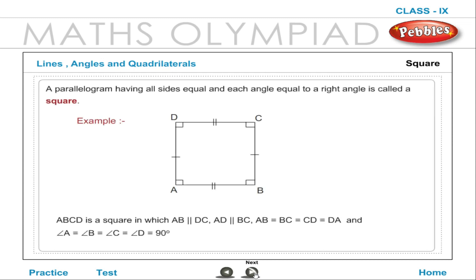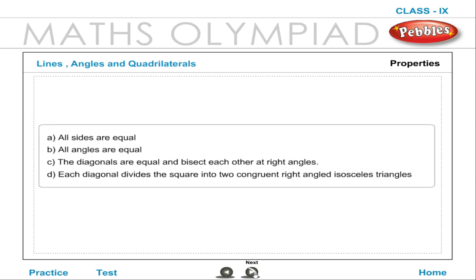Square: A parallelogram having all sides equal and each angle equal to a right angle is called a square. ABCD is a square in which AB is parallel to DC, AD is parallel to BC, AB = BC = CD = DA, and angle A = angle B = angle C = angle D = 90 degrees. Properties: All sides are equal; all angles are equal; the diagonals are equal and bisect each other at right angles; each diagonal divides the square into two congruent right-angled isosceles triangles.